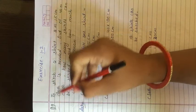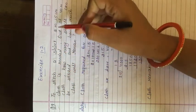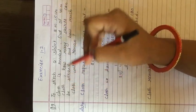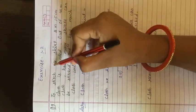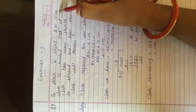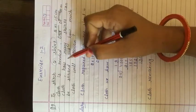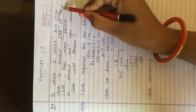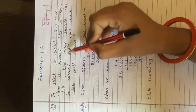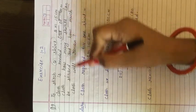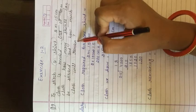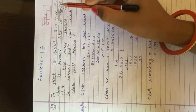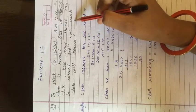Now coming to question no. 9. To stitch a shirt, 2 meter 15 cm cloth is needed. Out of 40 meter cloth, how many shirts can be stitched and how much cloth will remain? One shirt uses 2 meter 15 cm cloth. Total cloth is 40 meters. How many shirts can be made and how much cloth will be left extra?